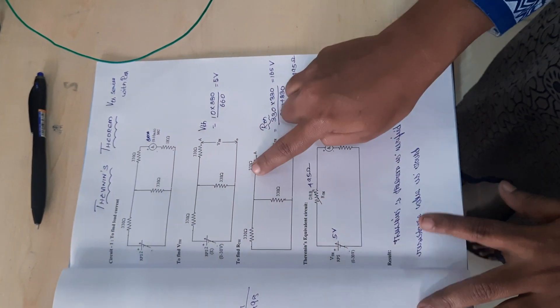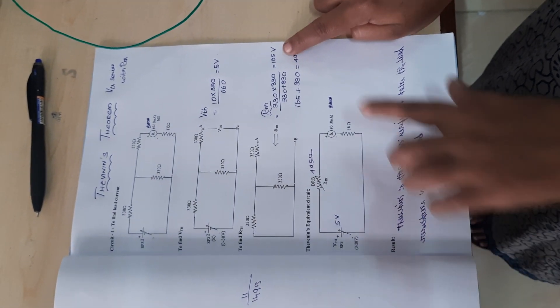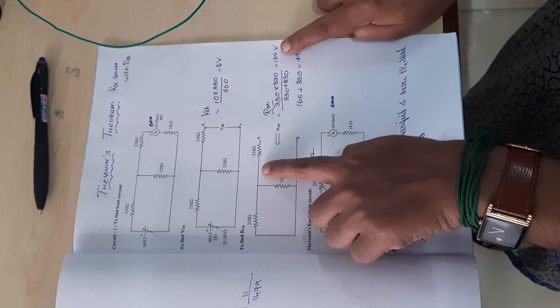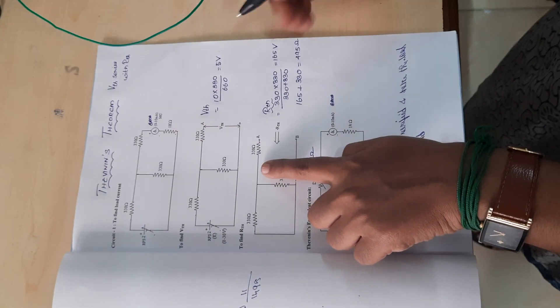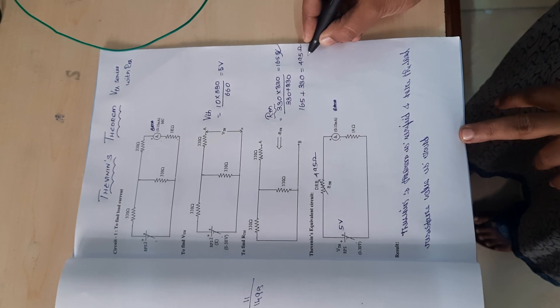Moving to R-Thevenin, these two resistances are in parallel, which equals 165 ohms. This 165 ohms in series with 330 ohms gives a total resistance of 495 ohms.